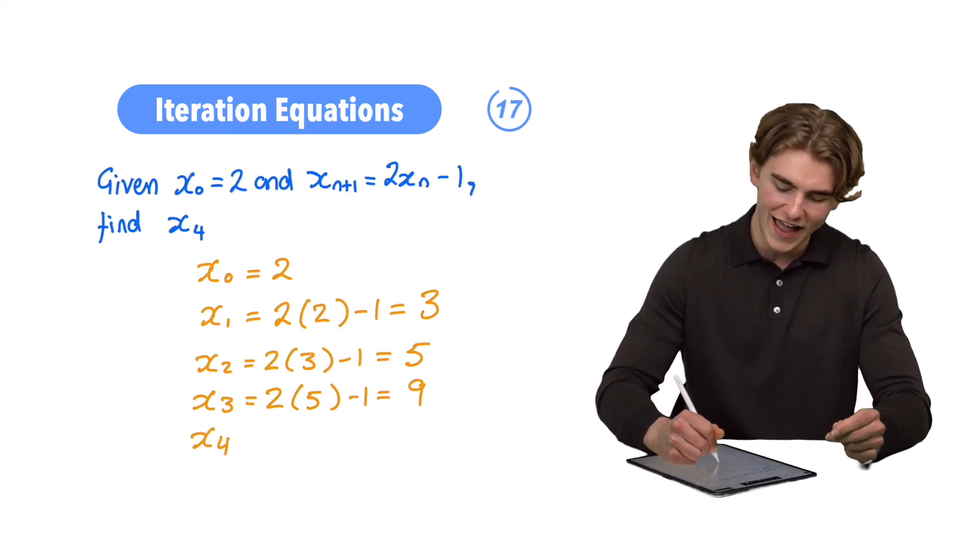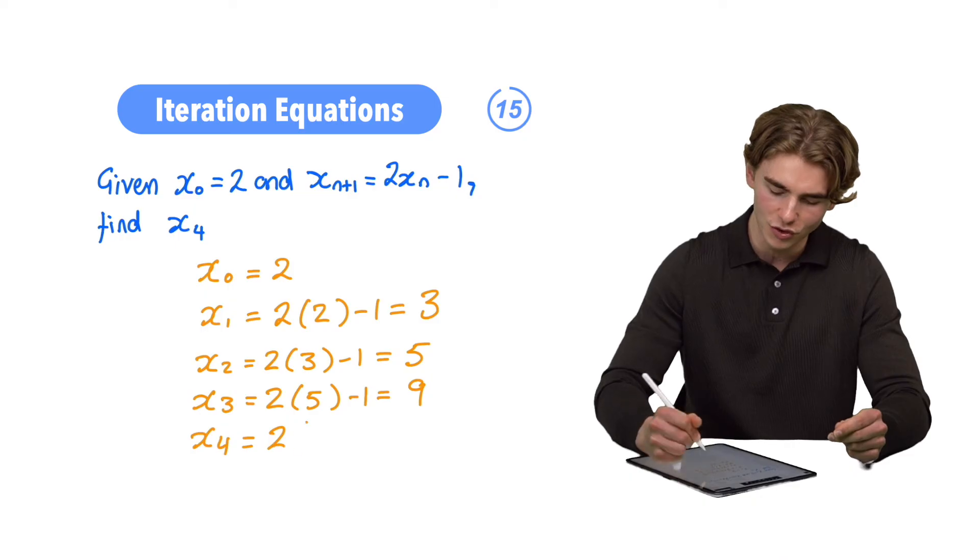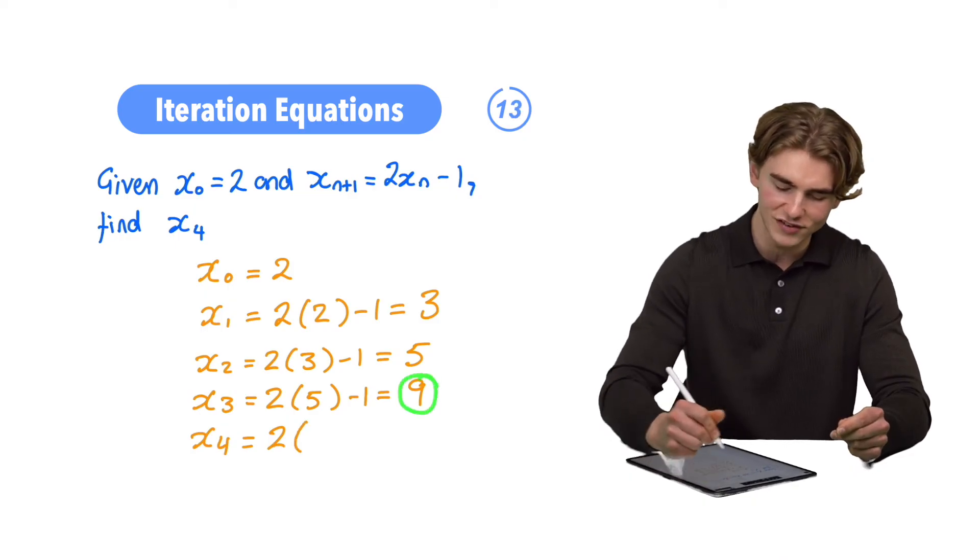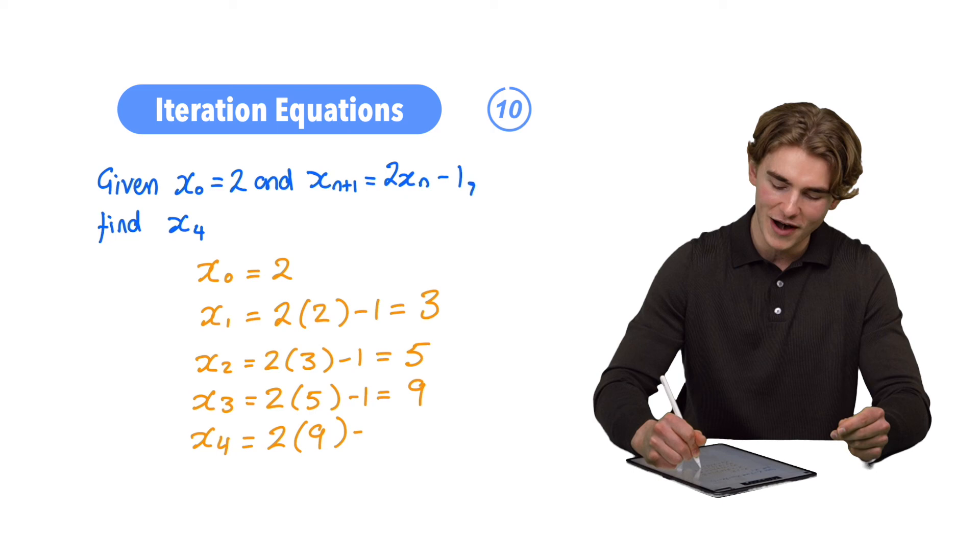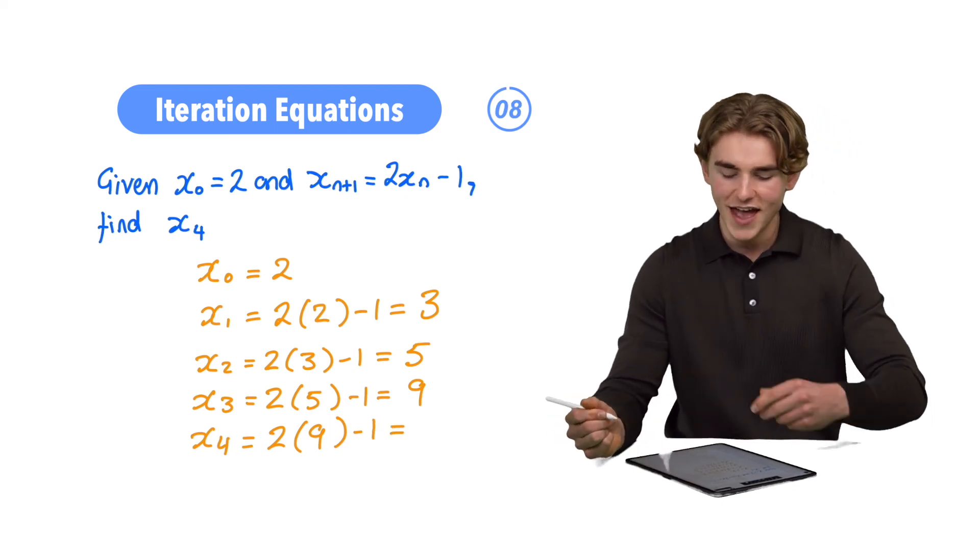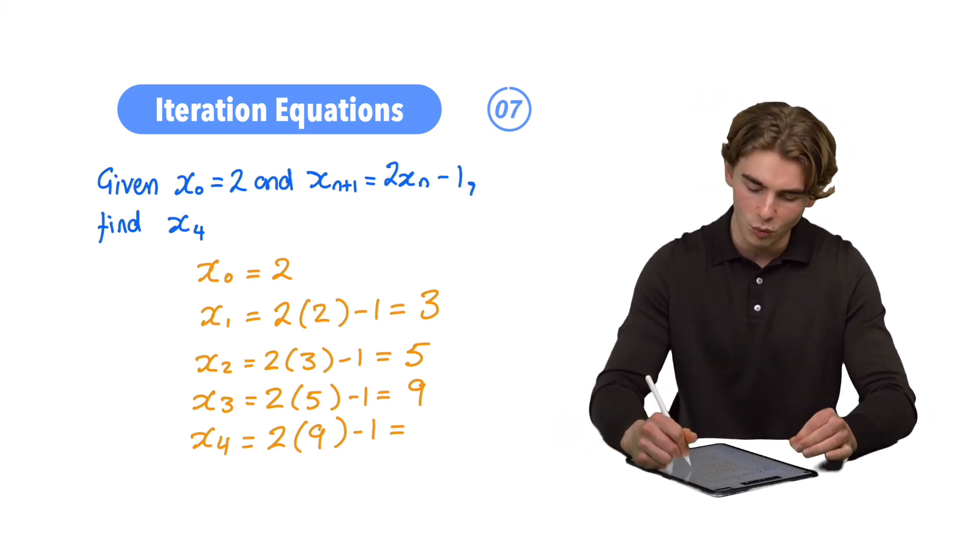And finally, x4. We're going to plug x3 in to find that. x3 was 9, so we're going to plug that in. 2 times by 9, close out brackets, minus our 1. 2 times by 9 is 18, subtract 1 is 17.